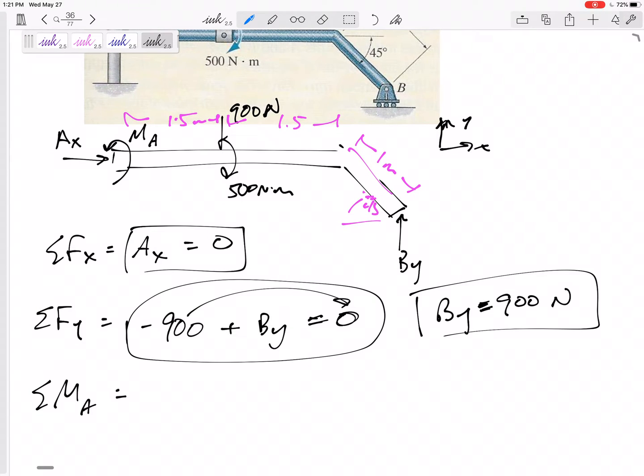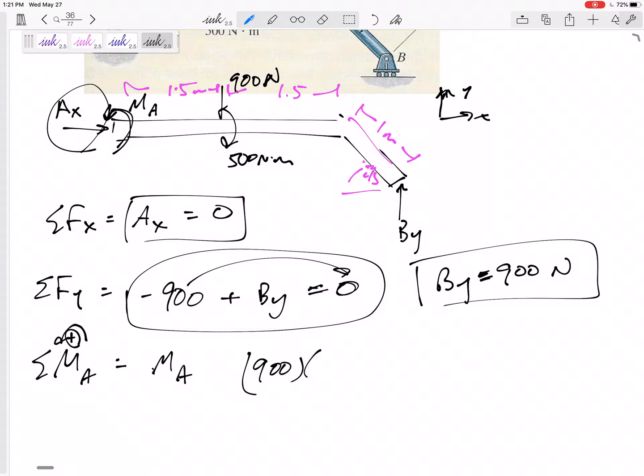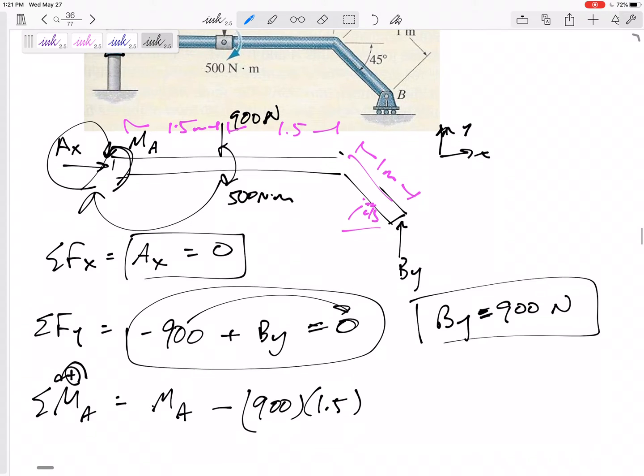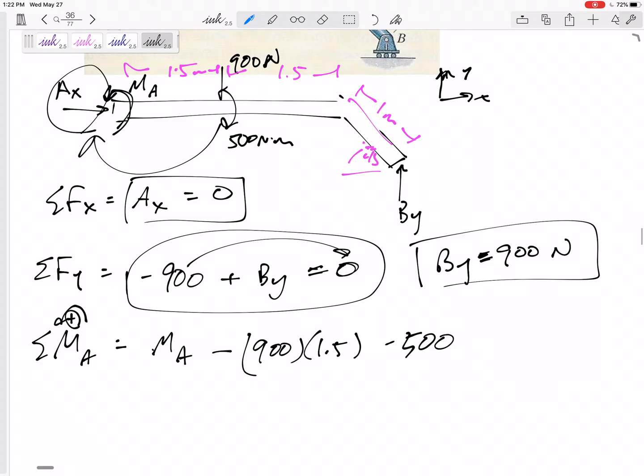So now I'm ready to sum the moments. I want to sum the moments about A. I've got MA, positive counterclockwise. AX goes straight through it. 900 is acting 1.5 away, creating a negative moment. And then I also have that negative 500. I would have that whether I was summing the moments about A, B, C, wherever I'd have a negative 500. Now notice that I'm not saying 500 times 1.5. The 500 is already the moment. It's not a force that you need to multiply times its moment arm. It is a moment. It's a free vector. It doesn't matter that it was 1.5 away. Don't multiply this 500 times 1.5. If I was keeping up with my units, it would help me out. Because this is Newtons, this is meters, this is already Newton meters. I don't need to multiply it times 1.5 meters. It's already a moment.